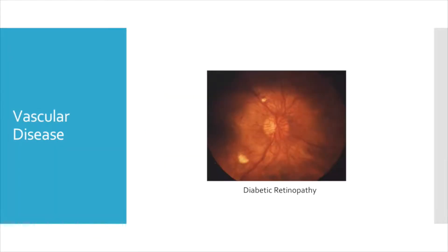It is also important to ask about vascular disease. Patients who smoke or have history of diabetes mellitus, coronary artery disease, peripheral vascular disease, hypertension, or other vascular risk factors are at increased risk for retinal vascular occlusion, ischemic optic neuropathy, or visual pathway stroke. Patients with pre-existing diabetic retinopathy can experience a vitreous hemorrhage or a retinal detachment, which can also cause acute onset vision loss.